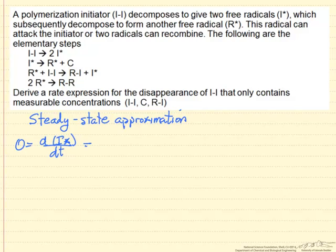Because they're elementary steps, we can write down for the steps involving this radical. For example, two of them are formed in the first step, and its rate is proportional to the concentration of I₂. One of them reacts in the second step, proportional to its concentration. One of them forms in the third step.